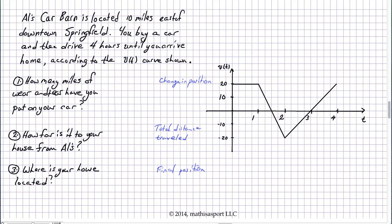First thing I want to do is I want to connect which of these three problems is talking about which of these three terms that we defined in the last situation. Okay so this first one is about how many miles of wear and tear. Well wear and tear doesn't care whether you're going forwards or backwards. And so this first question is really a question about the total distance traveled. Now how far is it to your house? That's a question about change in position. Notice because it's how far from Al's is it to your house? And then finally where is your house located? That's a final position calculation. And this of the three is the only one that requires us to know an initial position.